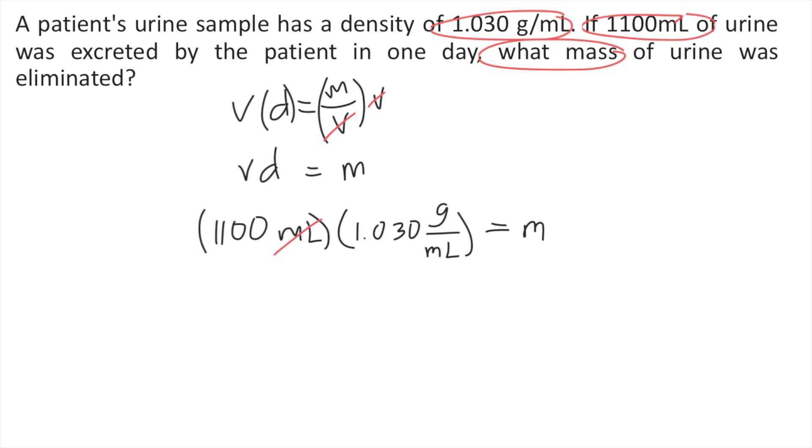The mL's cancel out, so the unit for mass is grams. You solve that using your calculator: 1,100 times 1.030, and you get approximately 1,133 grams. This is the mass of urine and the answer to the question.